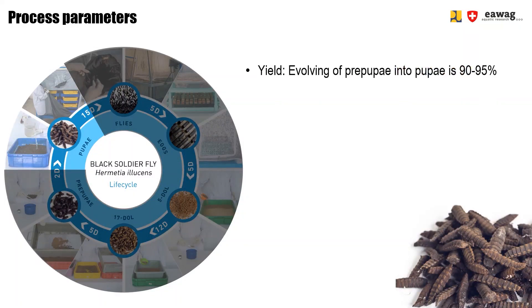Around 90-95% of the pre-PPs will evolve into pupae. It's difficult to assess this number because the stage happens inside the dark cage. We only measure the yield from pre-PP until fly, which we call the emergence rate, and this has been discussed in the fly stage module.